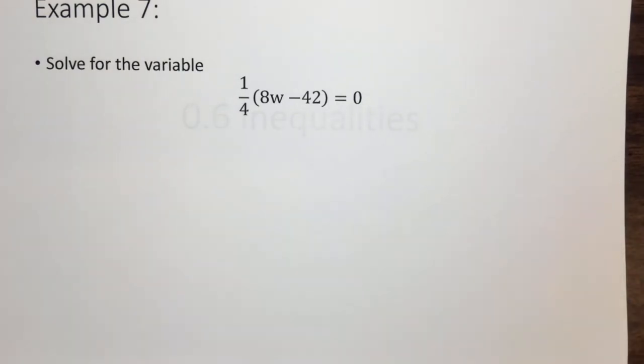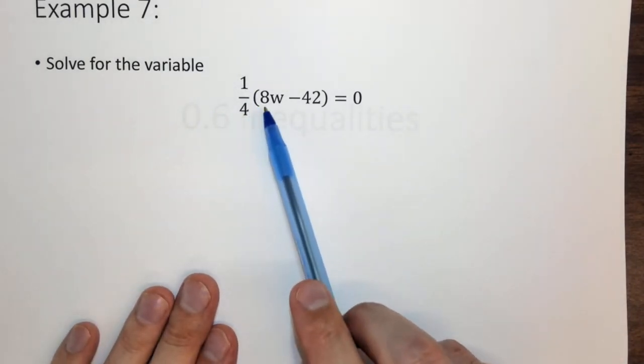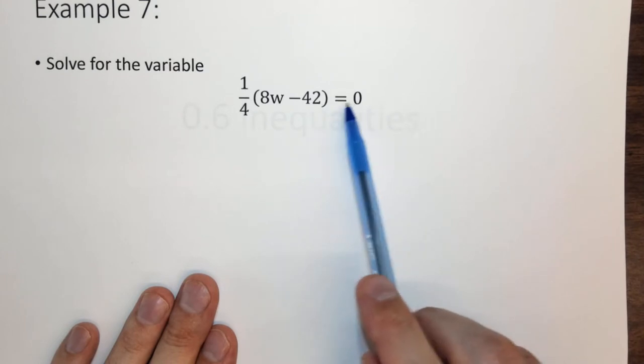Alright, so we have another variable one here, and this is the last one. Here now we have a quarter times 8w minus 42 equals 0.